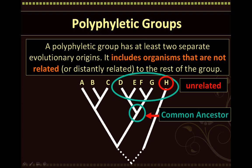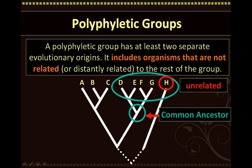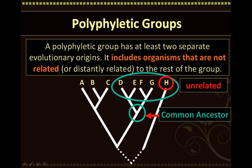So why was species H even included in the group in the first place? It is possible that species H resembled species D, E, F, and G in many characteristics, and because of that, we mistakenly assumed that this resemblance was due to common descent when it actually was not. As we see in the phylogenetic tree, species H is actually only distantly related to species D, E, F, and G, as indicated by the dotted lines at the bottom.